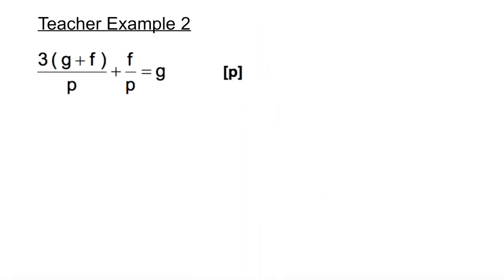Example 2. We have 3 open brackets g plus f close brackets over p, plus f over p, equals g. We need to make p the subject. The first thing I'm going to do is expand the bracket.